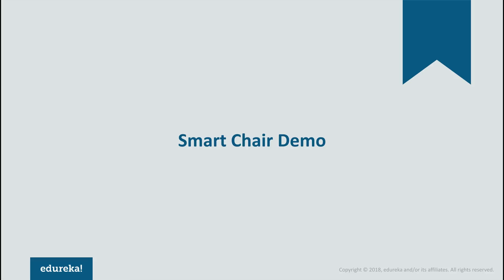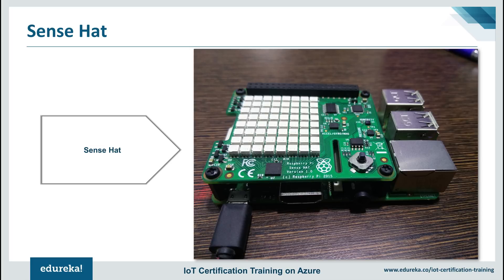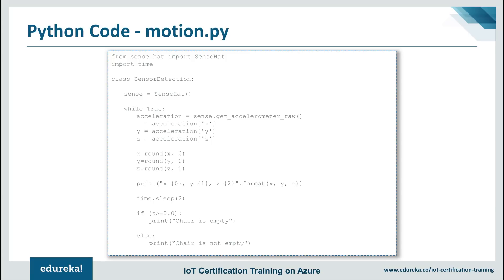Let's build our own IoT-based smart chair. I'll be working with the Raspberry Pi Sense HAT. The Sense HAT features an 8×8 RGB LED matrix, a mini joystick, and sensors such as a gyroscope, accelerometer, magnetometer, temperature sensor, humidity sensor, and barometric pressure sensor. This is the Python code which will help us find out if the chair is empty or not.